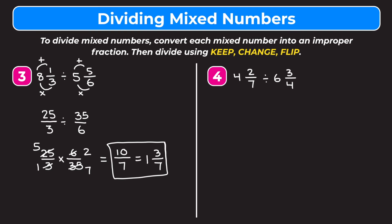Our final example is four and two-sevenths divided by six and three-fourths. We start by changing the mixed numbers into improper fractions: seven times four is twenty-eight, add twenty-eight to our numerator of two to get thirty, over a denominator of seven. For six and three-fourths: four times six is twenty-four, add twenty-four to three to get twenty-seven as our new numerator, keeping the denominator as four. Now we're going to keep change flip.